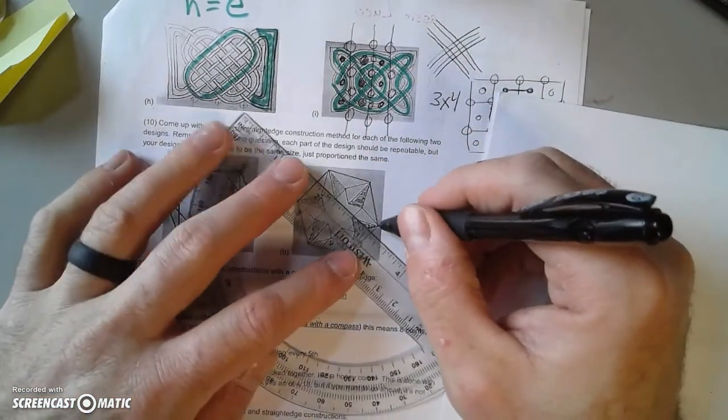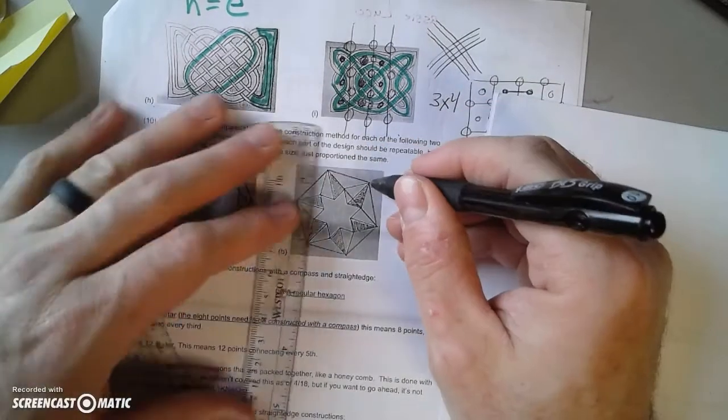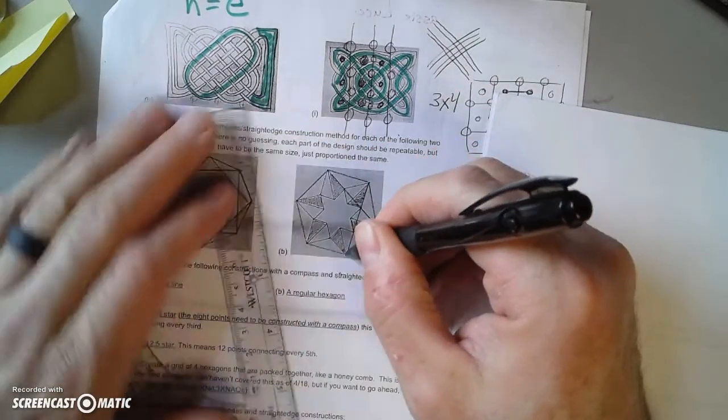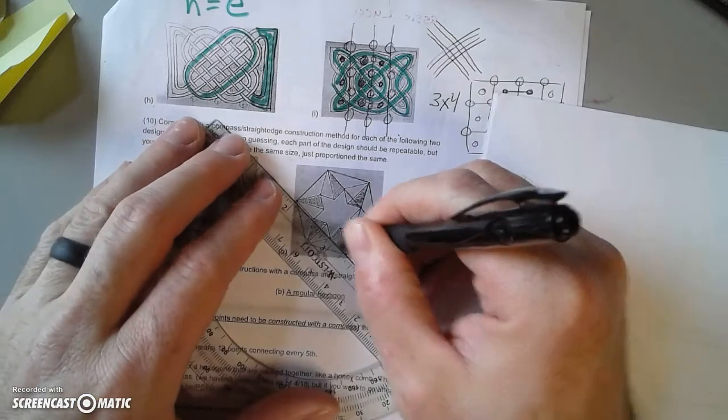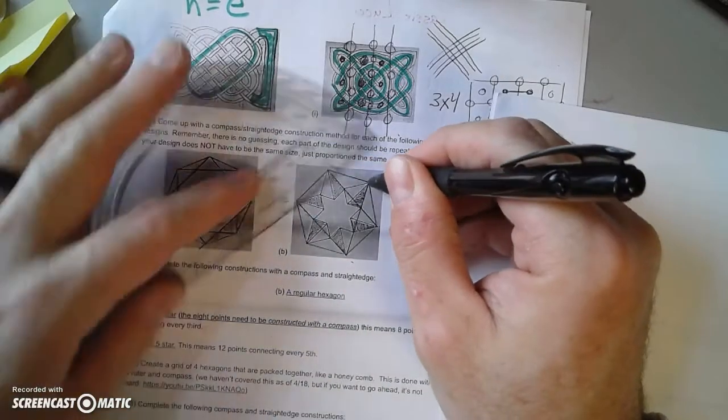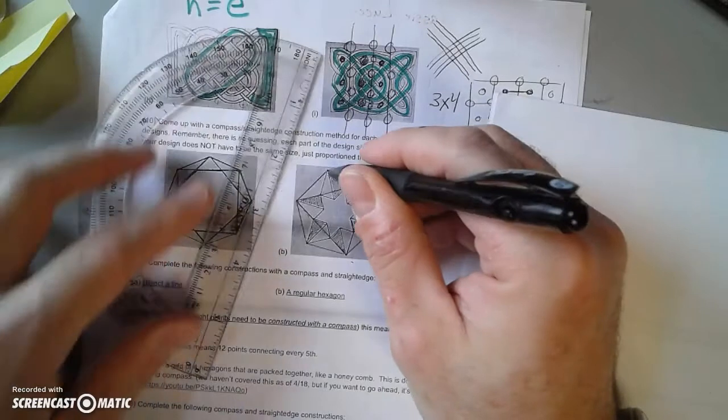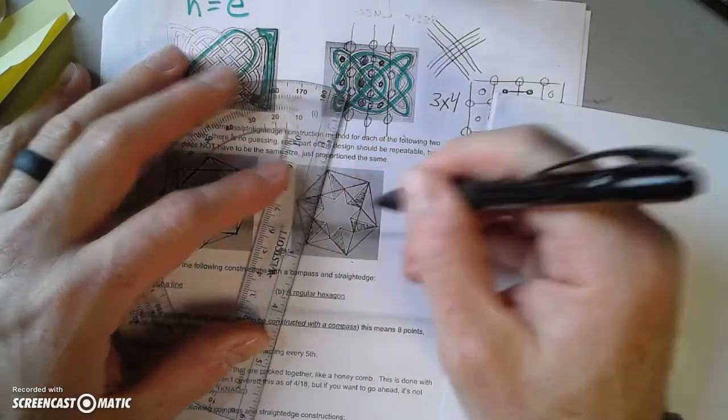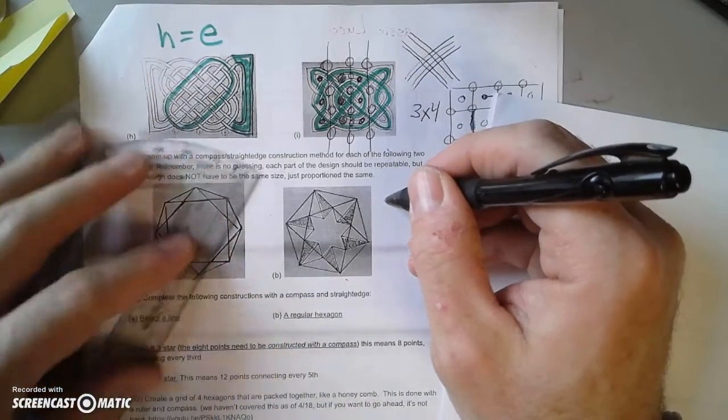Well, when I make that six-pointed star, I have to connect all of the lines. I won't know where to stop, so I'm just going to re-extend all those lines to see what turns up.